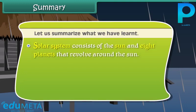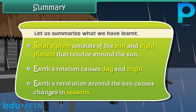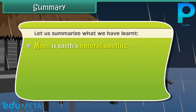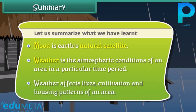Let us summarize what we have learnt. The solar system consists of the Sun and eight planets that revolve around the Sun. Earth's rotation causes day and night. Earth's revolution around the Sun causes changes in seasons. The Moon is Earth's natural satellite. Weather is the atmospheric condition of an area at a particular time, and it affects life, cultivation, and housing patterns of an area.